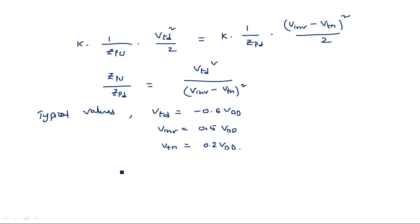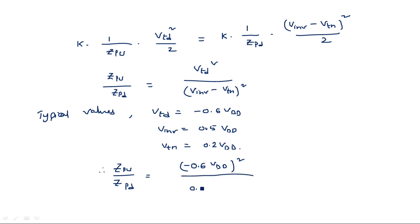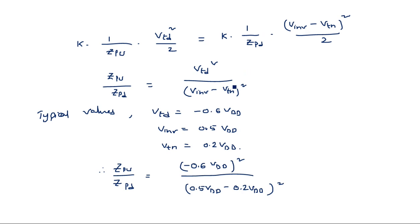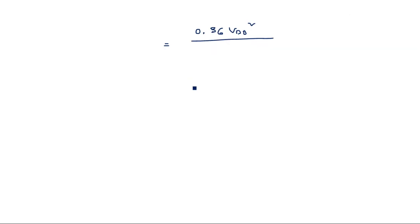Substituting typical values: ZPU/ZPD = VTD² / (V-inverter − VTN)². VTD is −0.6 VDD, V-inverter is 0.5 VDD, and VTN is 0.2 VDD. Therefore ZPU/ZPD = (−0.6 VDD)² / (0.5 VDD − 0.2 VDD)² = 0.36 VDD² / (0.3 VDD)² = 0.36 VDD² / 0.09 VDD² = 36/9.